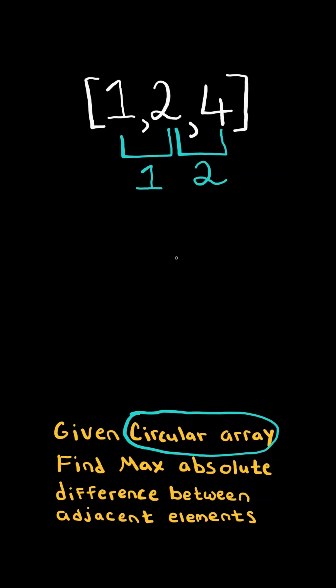And since we are given a circular array, the last element is adjacent to the first element. And the difference there is 3. And so finally, we return the maximum difference, 3.